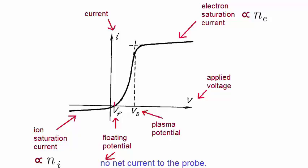Which enables the electron density to be determined. Again, if we're dealing with a quasi-neutral plasma, then the electron density is the density of the plasma.